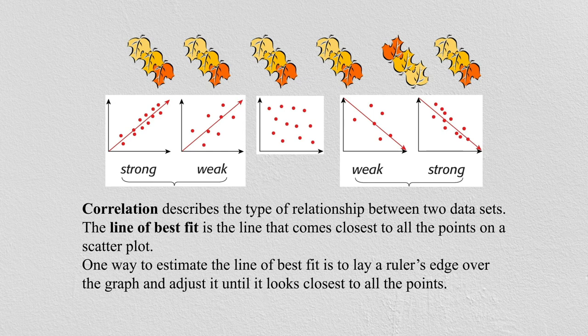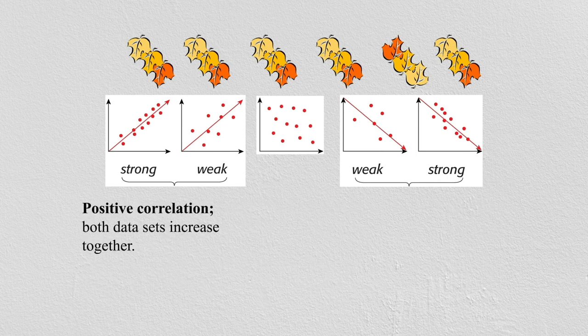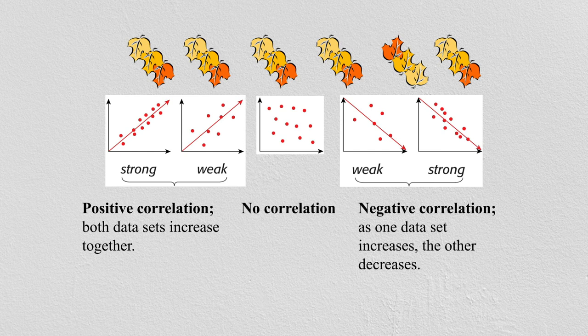One way to estimate the line of best fit is to lay a ruler's edge over the graph and adjust it until it looks closest to all the points. We first make the horizontal and vertical axes, then plot the red dots, and then draw a line closest to both sets of points — that is the line of best fit. Positive correlation means both data sets increase together; no correlation means no pattern; and negative correlation means as one data set increases, the other decreases.